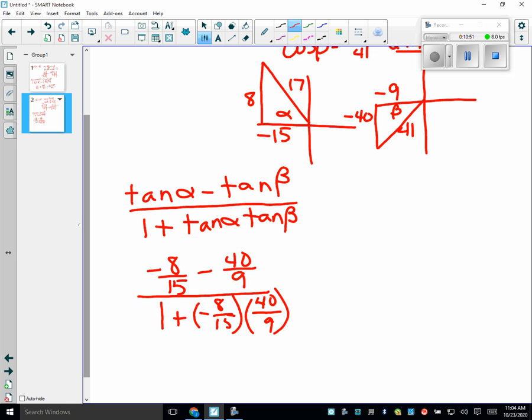So tangent of alpha minus beta is tan alpha minus tan beta over 1 plus tan alpha tan beta, right? What is tan alpha? Negative 8 fifteenths, isn't it? Minus, what's tan beta? 40 over 9, do you agree? Yes. All over 1 plus negative 8 fifteenths times 40 over 9.